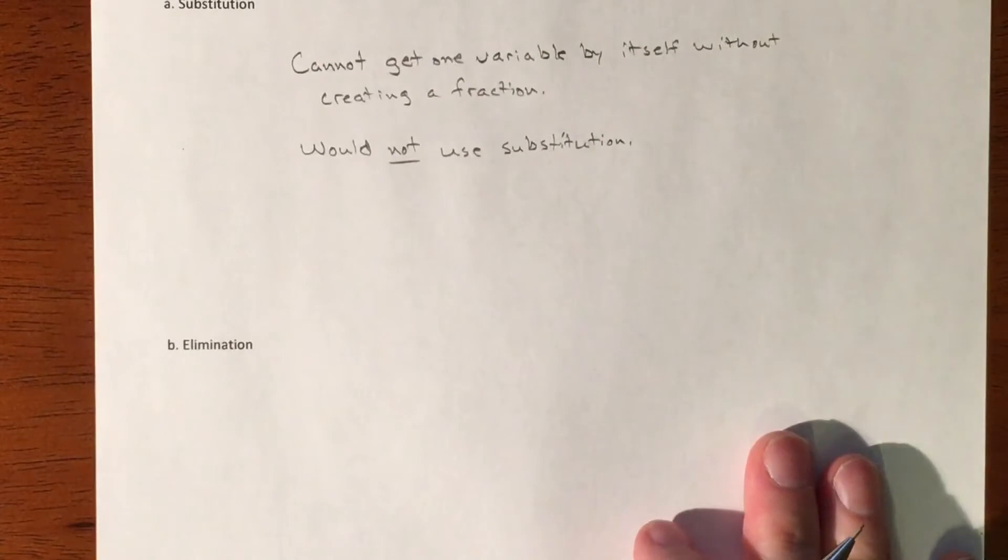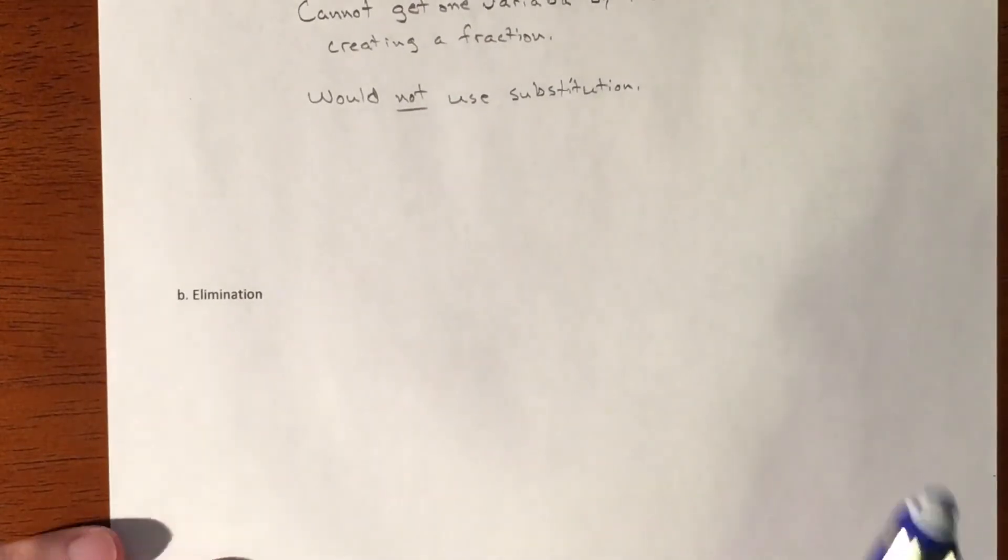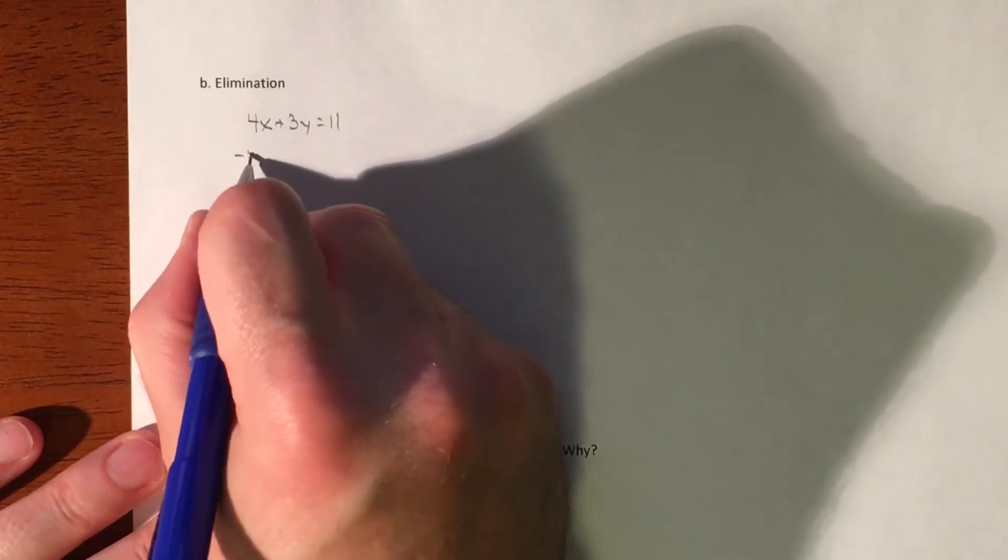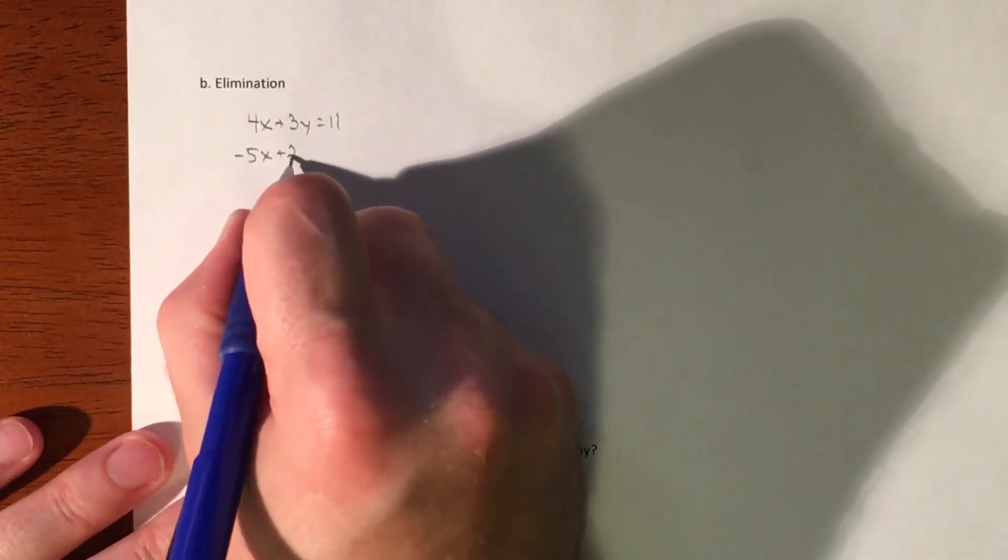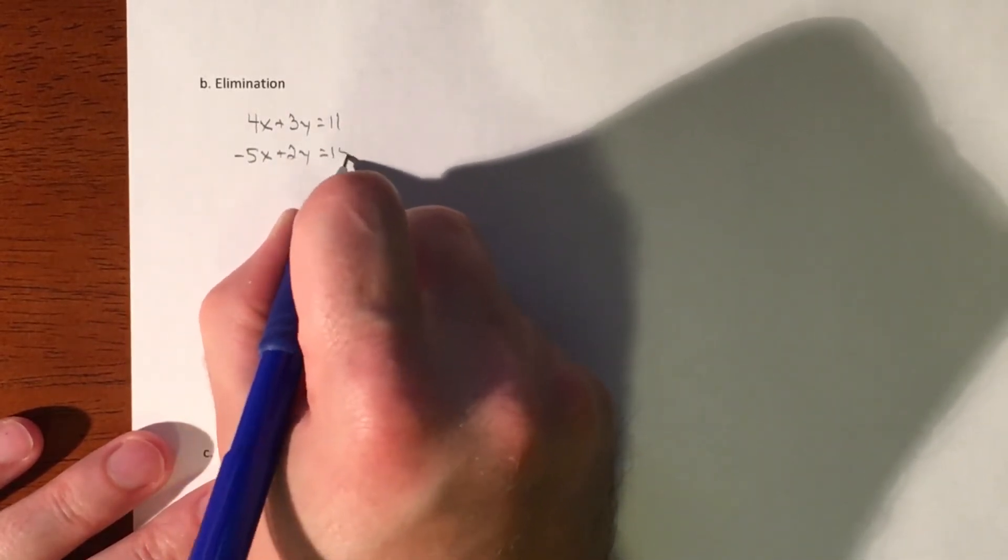Okay so that leaves us with elimination. Let me rewrite our problem so we can see it. We got 4x plus 3y equaling 11 and we have negative 5x plus 2y equaling 15.